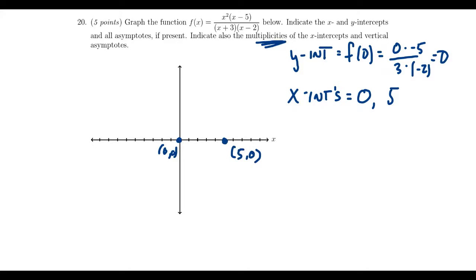We need to mention the multiplicities of the x-intercepts. x squared shows up twice, so that's an even multiplicity. x minus 5 shows up once, so that's an odd multiplicity. At x equals 0, we're going to touch the x-axis. But at 5, we're going to cross the x-axis. That distinction will be helpful.